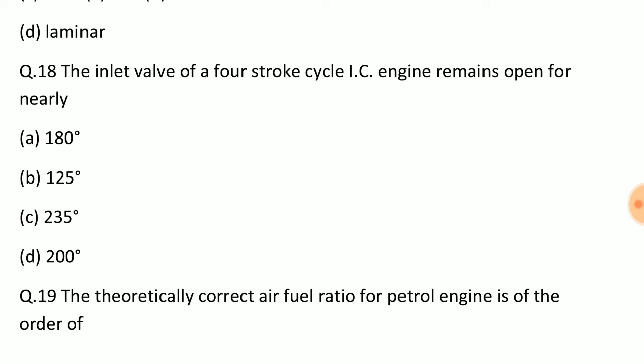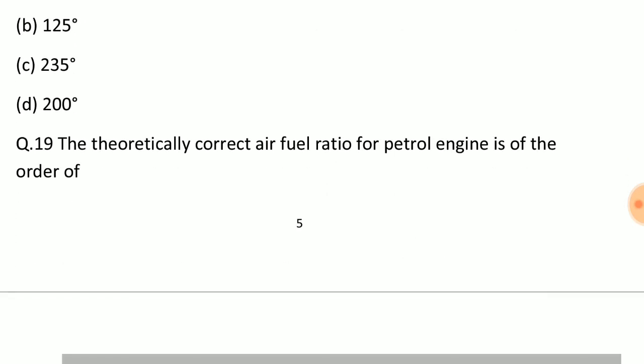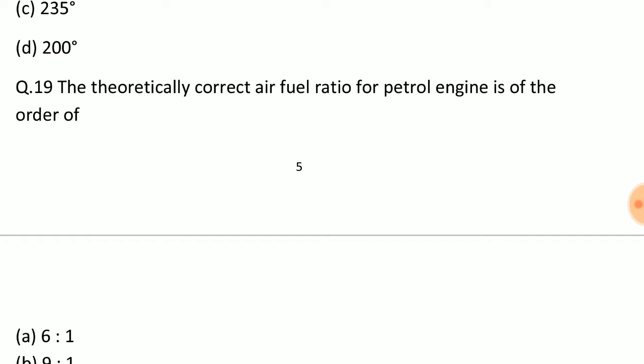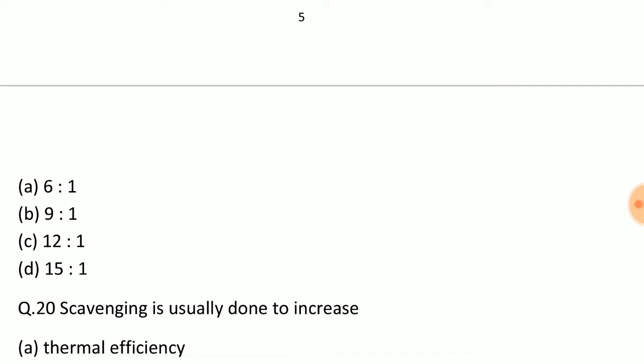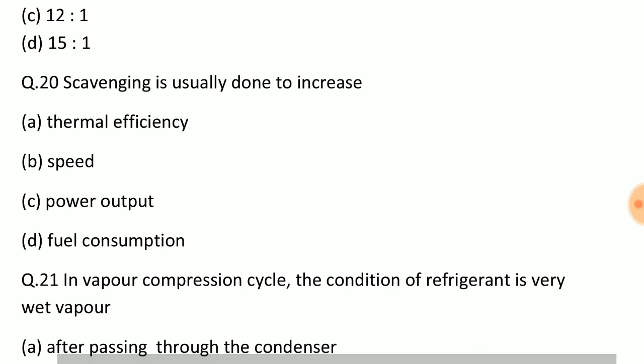Question: The inlet valve of a four stroke cycle internal combustion engine remains open for nearly? Answer: Option C, 235 degrees. Question: The theoretically correct air fuel ratio for petrol engine is of the order of? Answer: Option D, 15 ratio 1. Question: Supercharging is usually done to increase? Answer: Option C, power output.